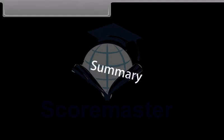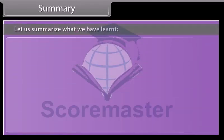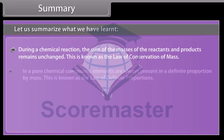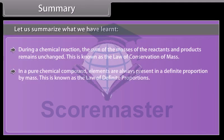Summary. Let us summarize what we have learned. During a chemical reaction, the sum of the masses of the reactants and products remains unchanged. This is known as the law of conservation of mass.